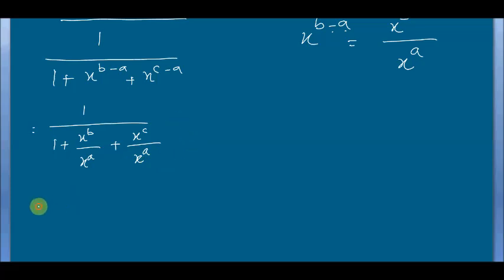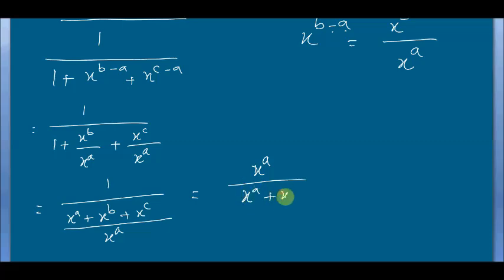After that I will take the LCM of the bottom fractions, it will be x^a. I think you know this. It becomes, I am just inverting this one, x^a by x^a plus x^b plus x^c.